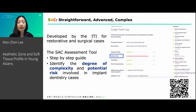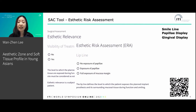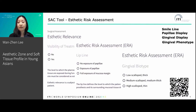One of the components being assessed is the aesthetic risk. In the aesthetic risk assessment, some of the questions that they ask are the visibility of the treatment area upon smiling. In essence, what they are looking for is the patient's smile line. Another question pertains to the display of the papilla or the gingiva. And lastly, they look at the gingival phenotype of the patients, be it thick, medium, or thin.